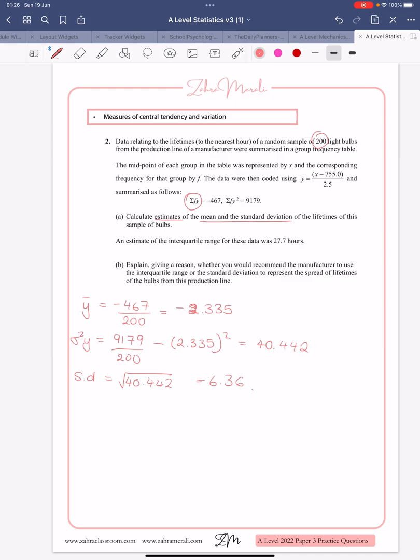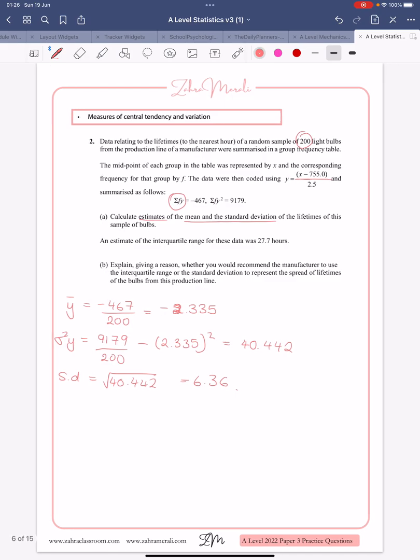In order to get to the y, what did they do? So they took a value, minus 755, then divided by 2.5. So you're going to do the opposite. You're going to take your y bar, you're going to multiply it by 2.5, and then you're going to add 755.